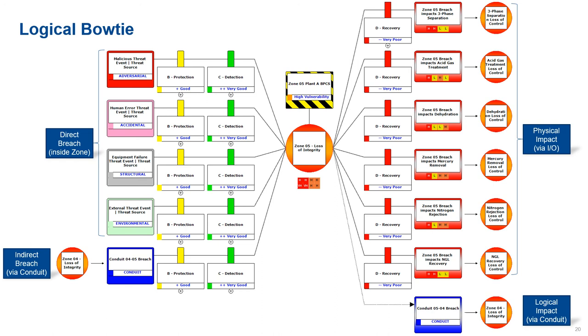Zone five could lead to physical impacts on all the assets that are controlled by zone five IACS. We could also have zone five through the conduit becoming a threat to zone four. This simple representation is giving a very clear picture of what's going to directly challenge zone five, what external or indirect threats could happen on zone five, the impact, the physical impact from zone five, but also the logical impact from zone five through its conduits to any other zones.